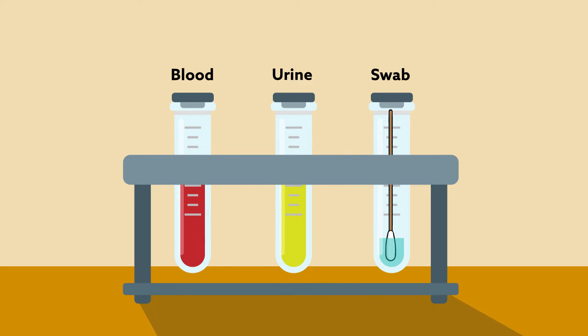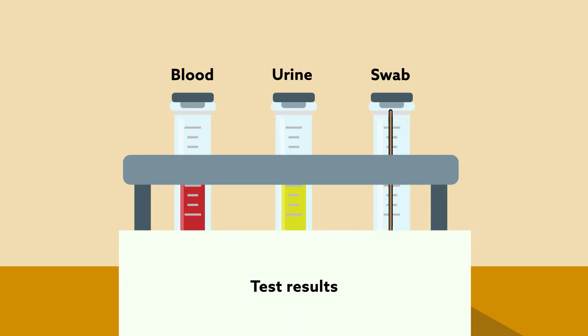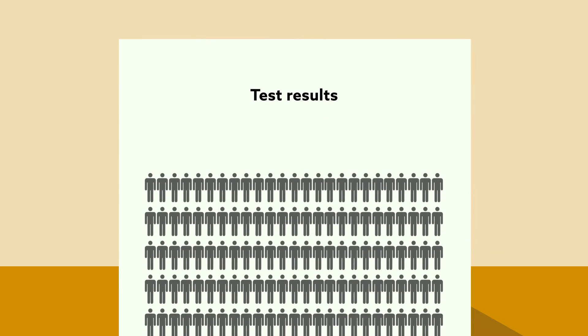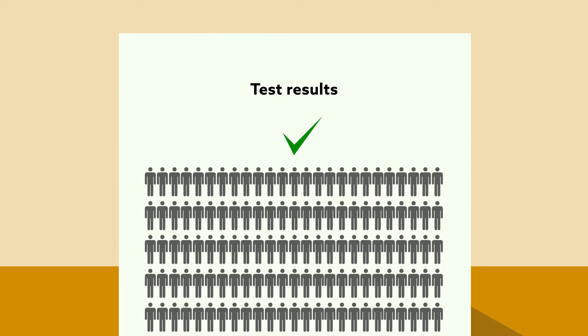If the test comes back negative, the whole group is cleared in just one step. If the test is positive, algorithms can help divide the group for retesting to pinpoint the infected individuals.